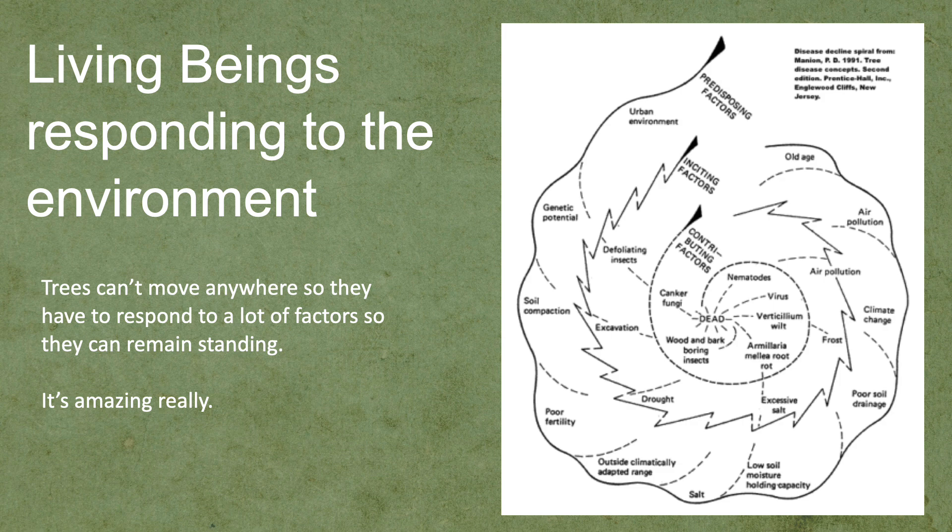Trees are living beings — they're responding to the environment all the time. They can't move anywhere, so they have to evolve and defend themselves from everything happening to them. This is the Mannion spiral, which talks about all the things that impact on trees: climate, pests and diseases, soil structure, salinity, and much else. A tree, in order to remain standing, has to defend itself against all of these things. In the next session, we'll be looking at why trees fall down and exploring some of these factors in more detail. Thanks.